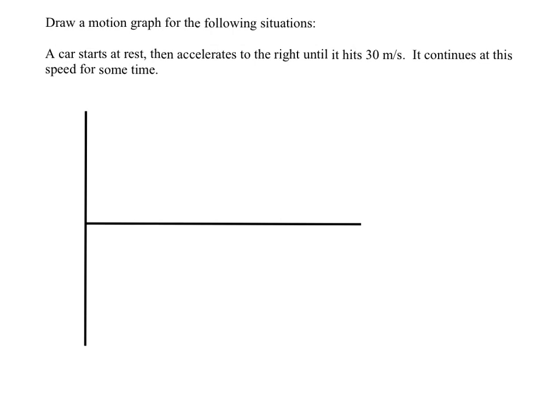Alright, so in this video we're going to be drawing velocity versus time graphs. There's actually a slight problem with the way it's written - it just says draw a motion graph. That should really be more specific. Motion can be position, velocity, or acceleration. It's got to be more specific. So, a velocity versus time graph.